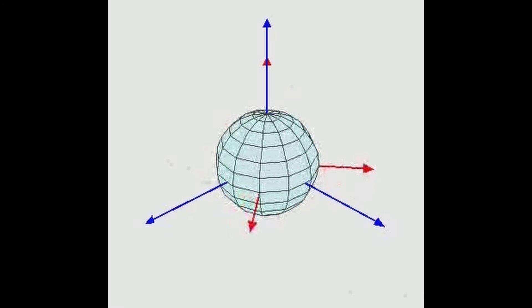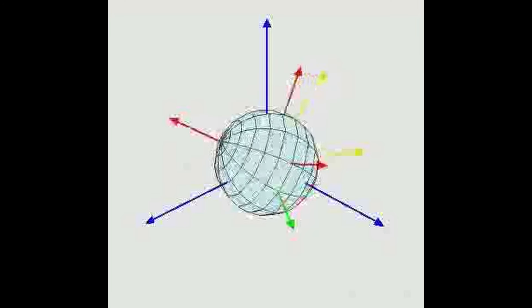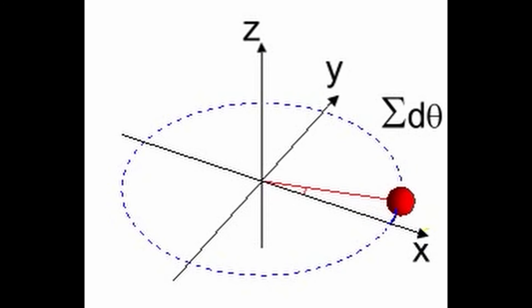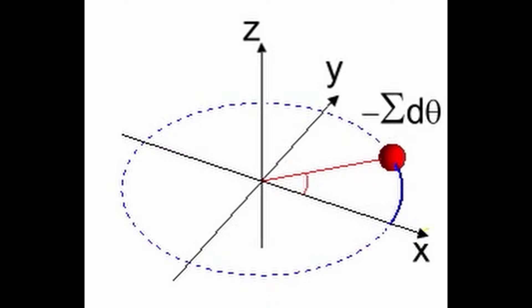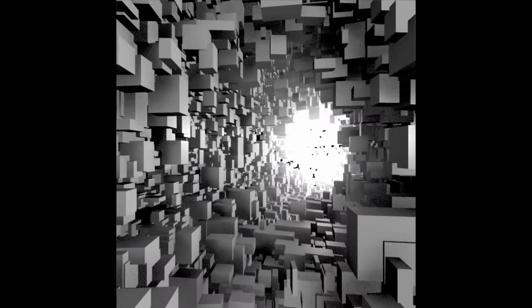Examples: spatial translation symmetry leads to conservation of linear momentum; rotational symmetry leads to conservation of angular momentum; time translation symmetry leads to conservation of energy. Noether's theorem beautifully connects symmetries to fundamental physical laws.